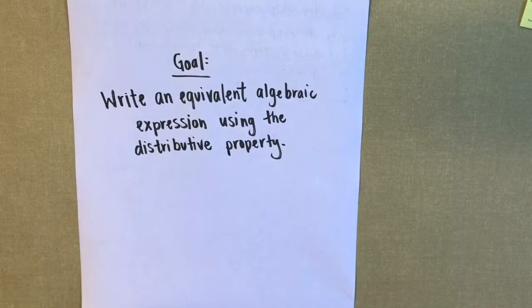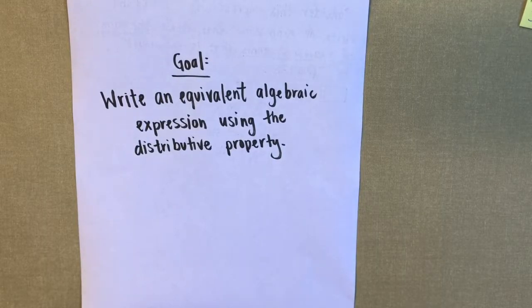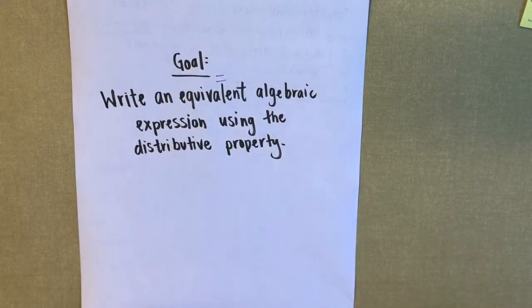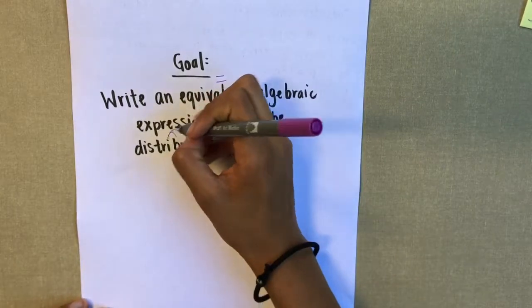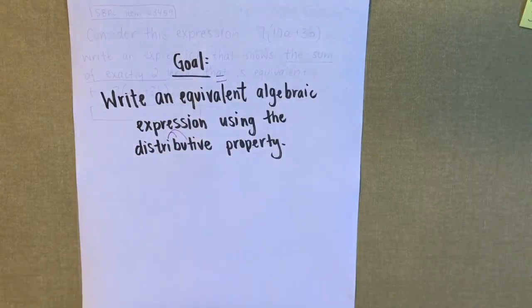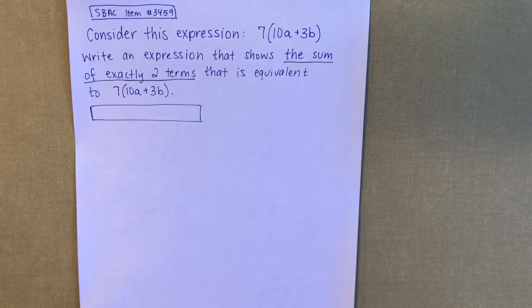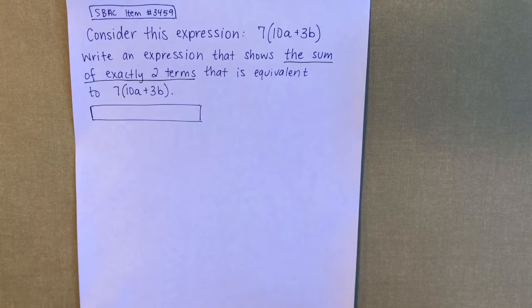The goal of this video is to write an equivalent or equal algebraic expression using the distributive property. Consider this expression: 7 in parentheses 10a plus 3b. Write an expression that shows the sum of exactly two terms that is equivalent to 7 in parentheses 10a plus 3b.